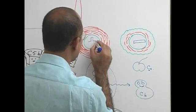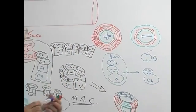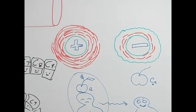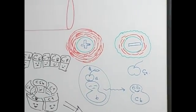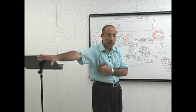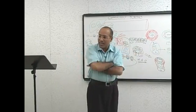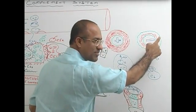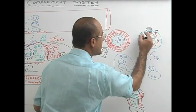So, will the Membrane Attack Complex more effectively attack gram positive or gram negative membrane? Where is the membrane more accessible? If something is more exposed, chances of being attacked are more. Gram positive has its membrane only inside, protected by thick peptidoglycan. Gram negative has a lipid membrane on the outside as well, so the Membrane Attack Complex can more effectively destroy gram negative bacteria and less effectively destroy gram positive bacteria.